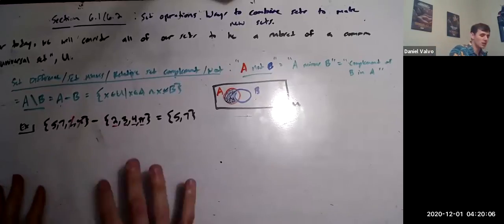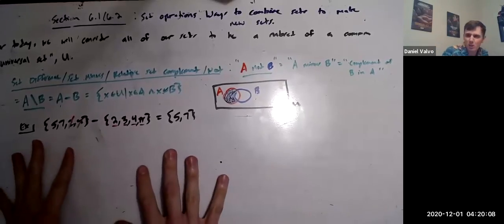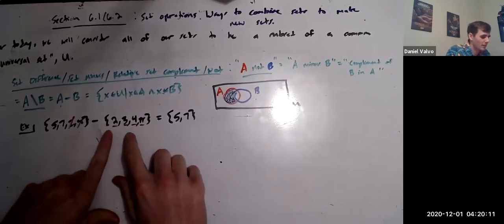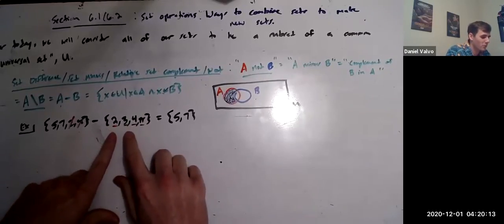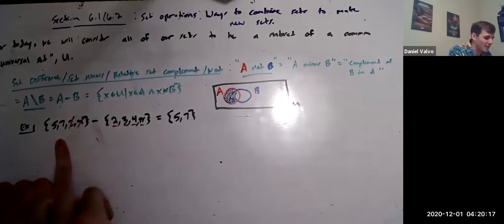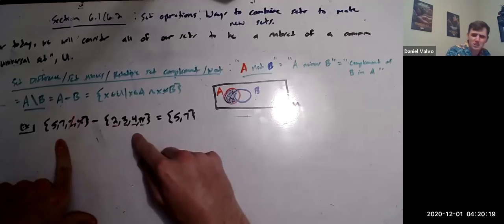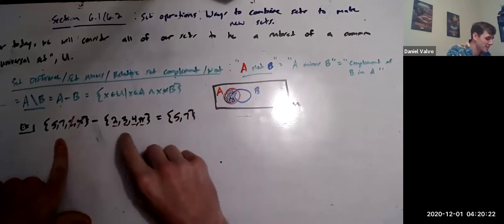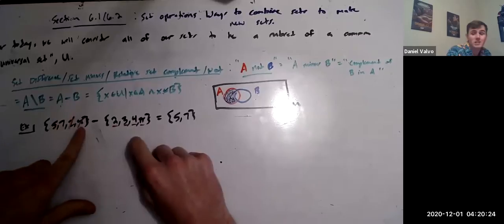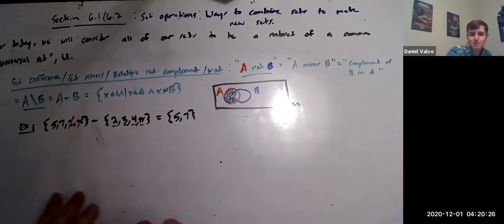One potentially confusing thing is the fact that we don't have 3 or π in the first set, and so it might be tempting to say like 'keep minus 3 and minus π.' Don't do that. It literally just means go through the first set and cross out anything that's in the second set. Done.